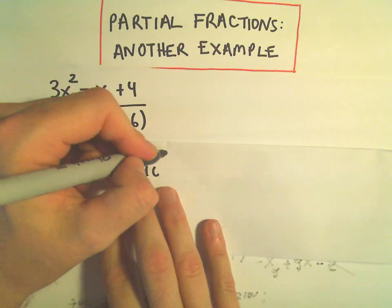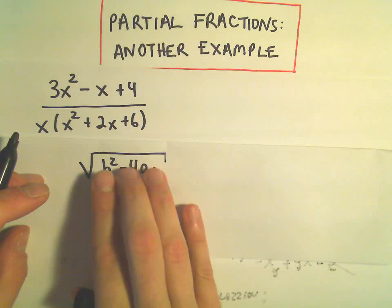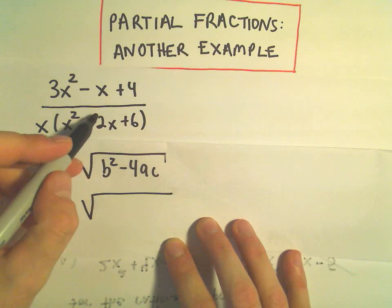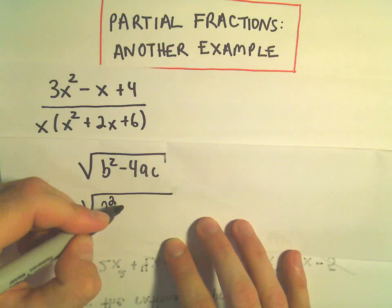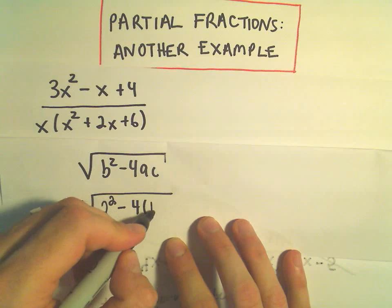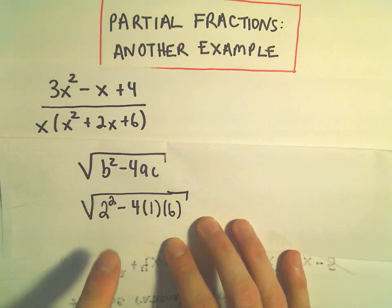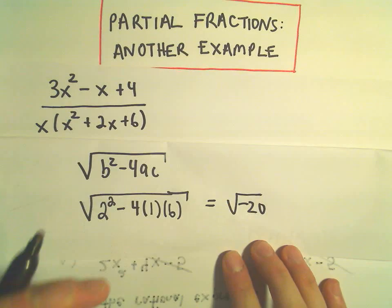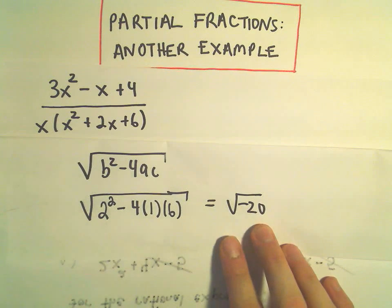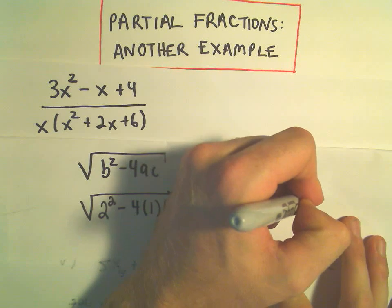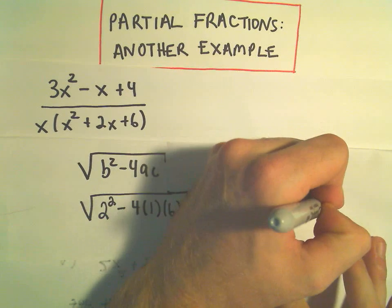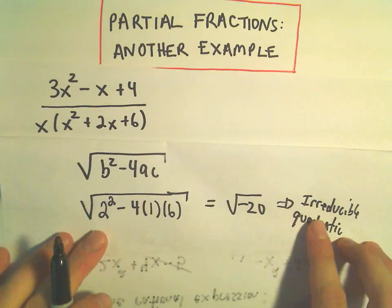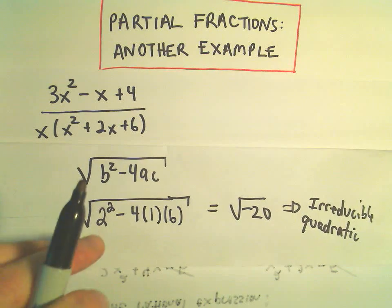This is the stuff underneath the square root in the quadratic formula. Remember, if this works out to be negative, that tells me that our quadratic doesn't factor. And in this case, our b value would be 2. So we would have 2² - 4 times a, which is 1, times c, which is 6. Well, this is going to be 4 - 24. We're going to get a negative 20 underneath there. And since we're getting a negative number underneath the radical, that tells me that it doesn't factor. We say it's an irreducible quadratic. So it makes you sound smart if you call it irreducible instead of just saying it doesn't factor.